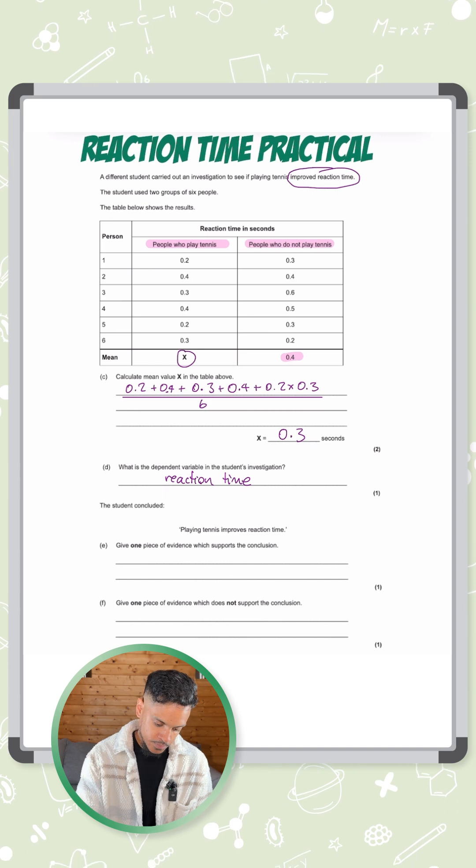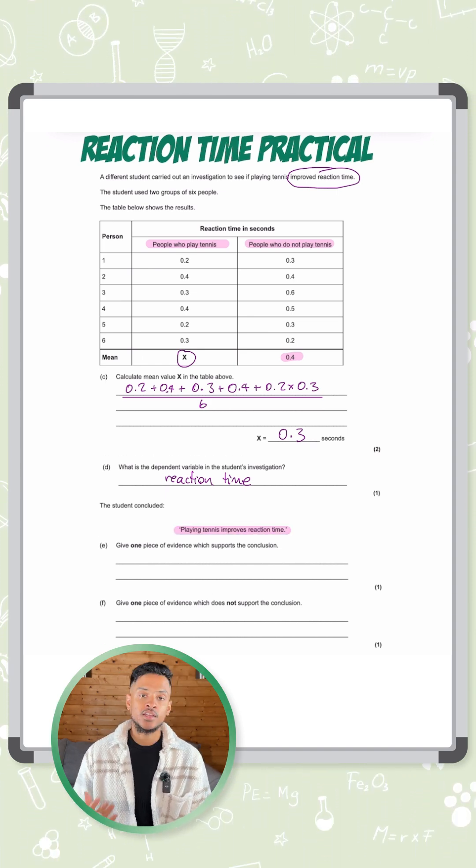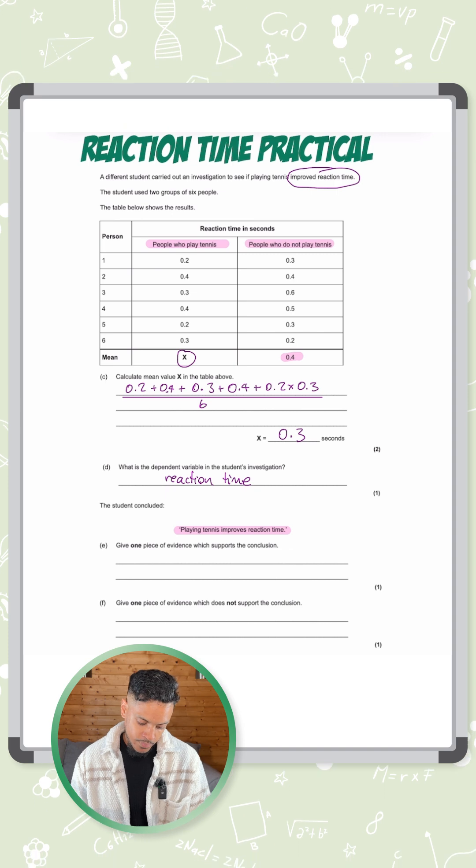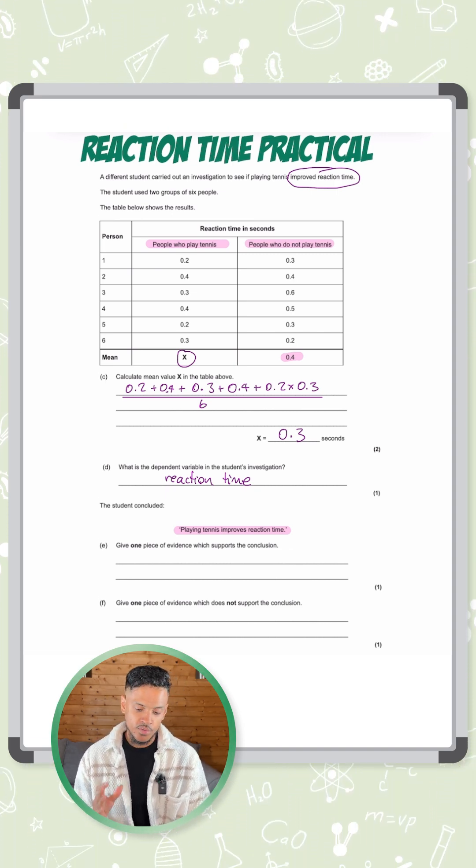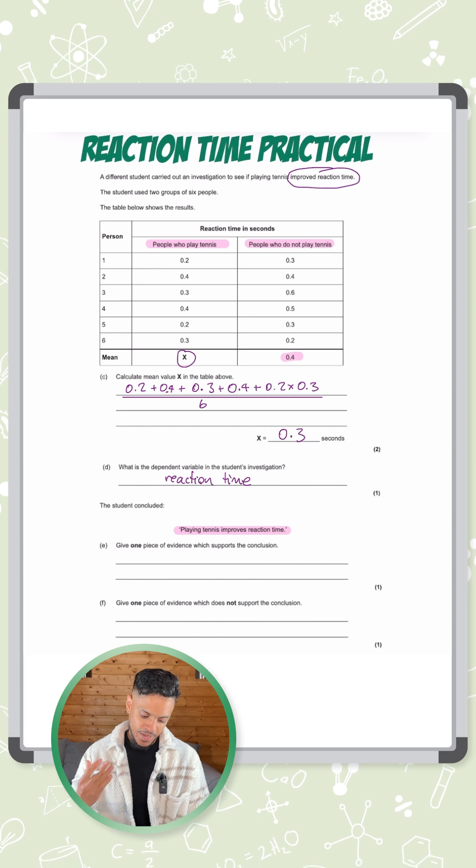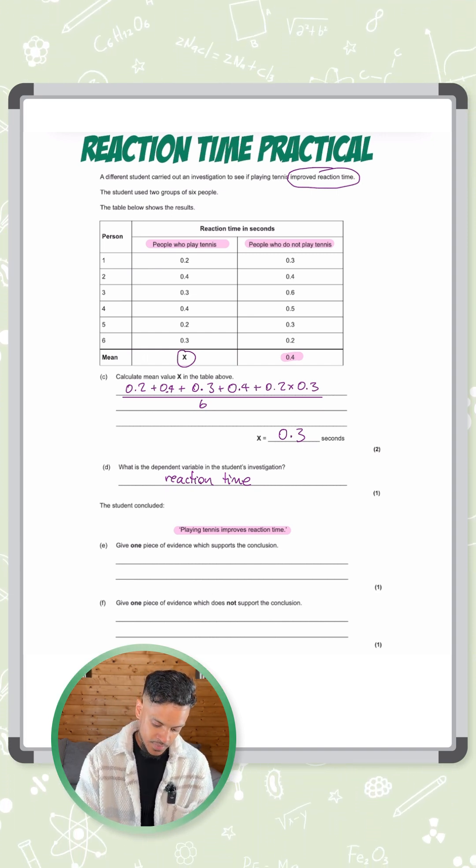Next one, the student concluded playing tennis improves reaction time. And they're asking for the next part, give one piece of evidence which supports the conclusion. So what can we say supports the fact that if you play tennis, it improves your reaction time?